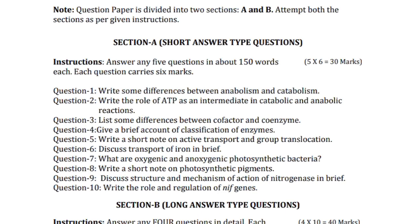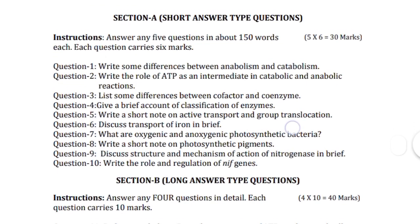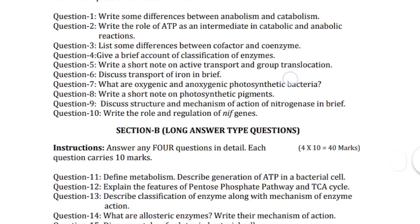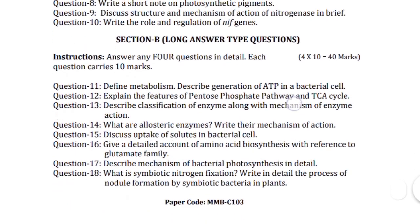Question 6: Discuss transport of iron in brief. Question 7: What are oxygenic and anoxygenic photosynthetic bacteria? Question 8: Write a note on photosynthetic pigments. Question 9: Discuss structure and mechanism of action of nitrogenase in brief. Question 10: Write the role and regulation of nif genes. You have to attempt only five questions in Section A.